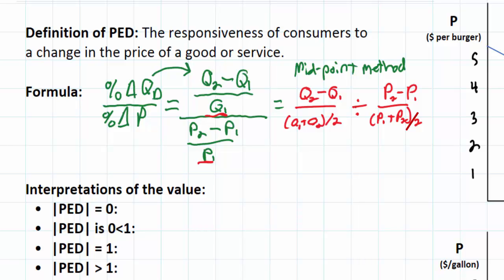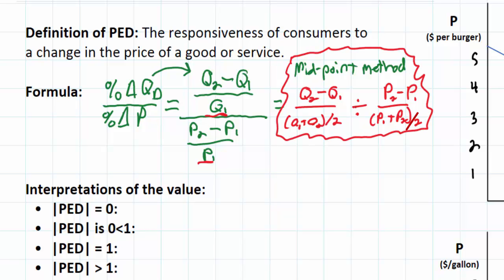This is what's called the midpoint method. In my particular classes we don't have to use this slightly more complex method, but if you are in a class that requires it, keep in mind the only difference is that instead of using the original quantity or original price, we use the average quantity between Q1 and Q2, and the average price between P1 and P2.